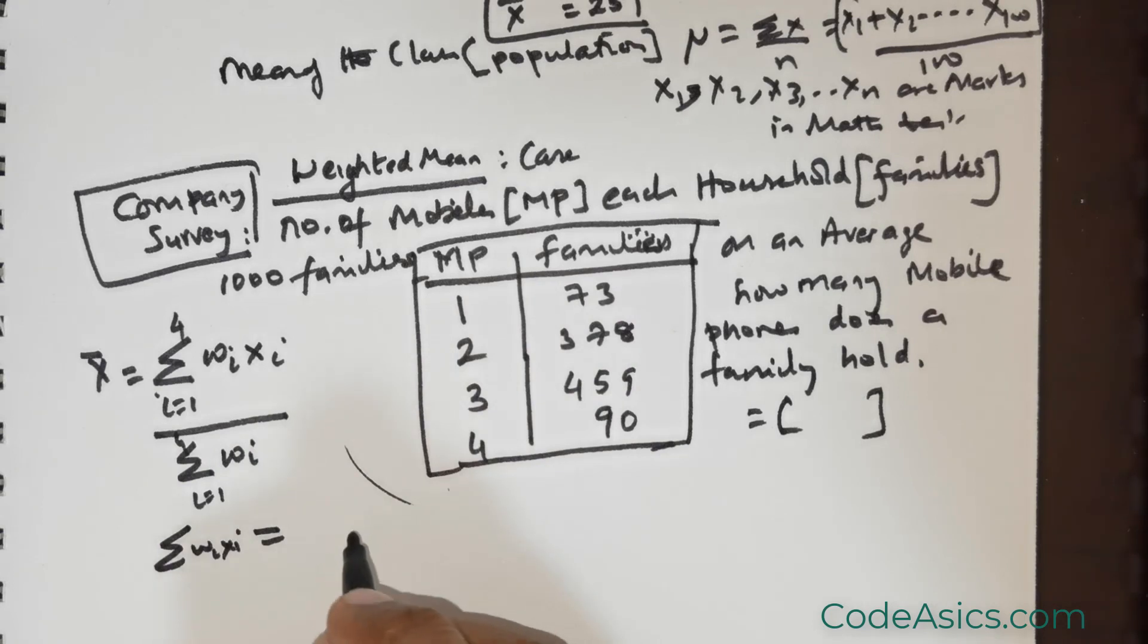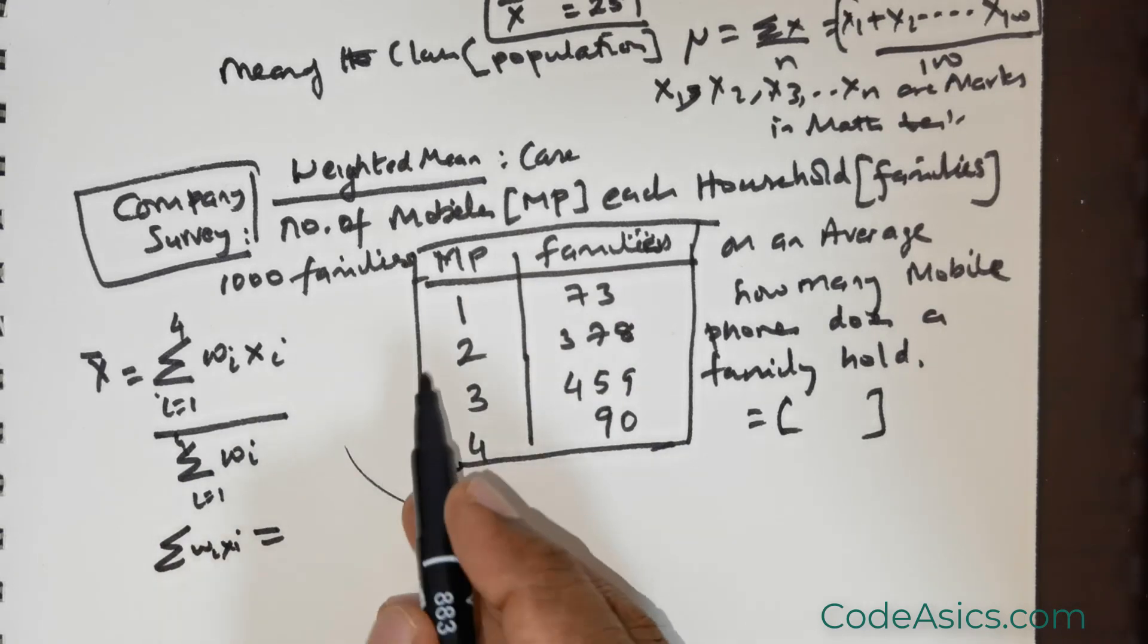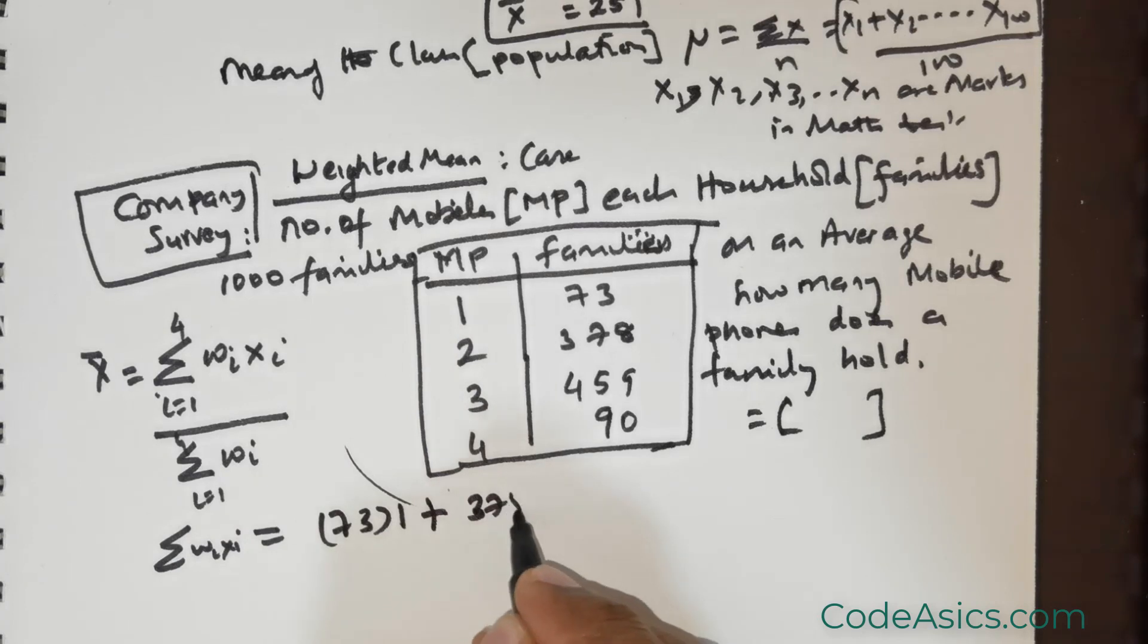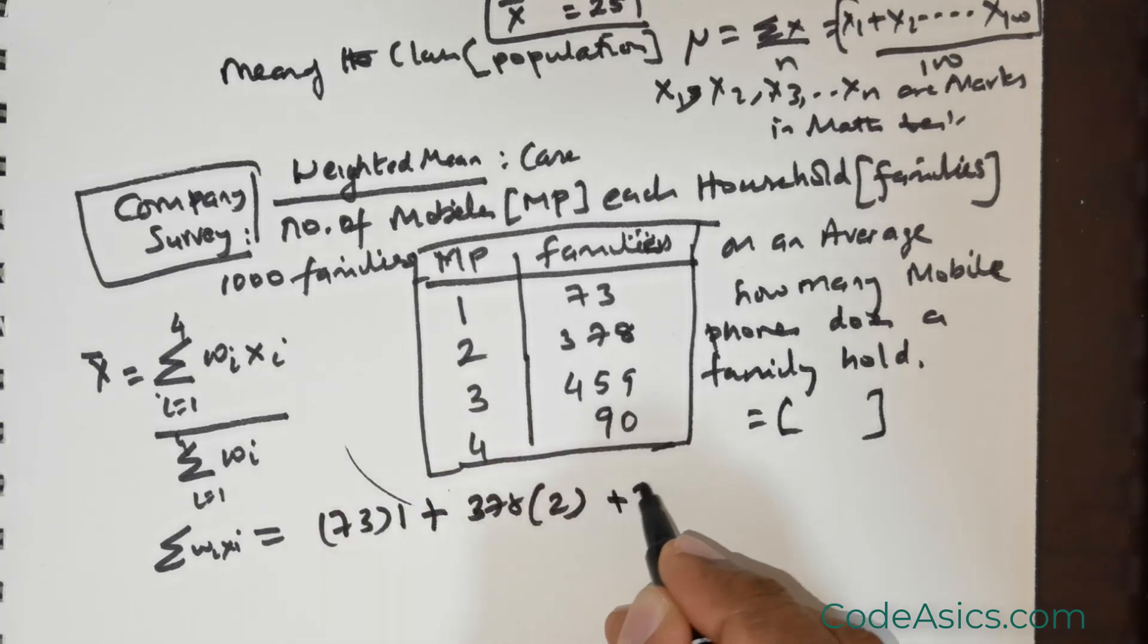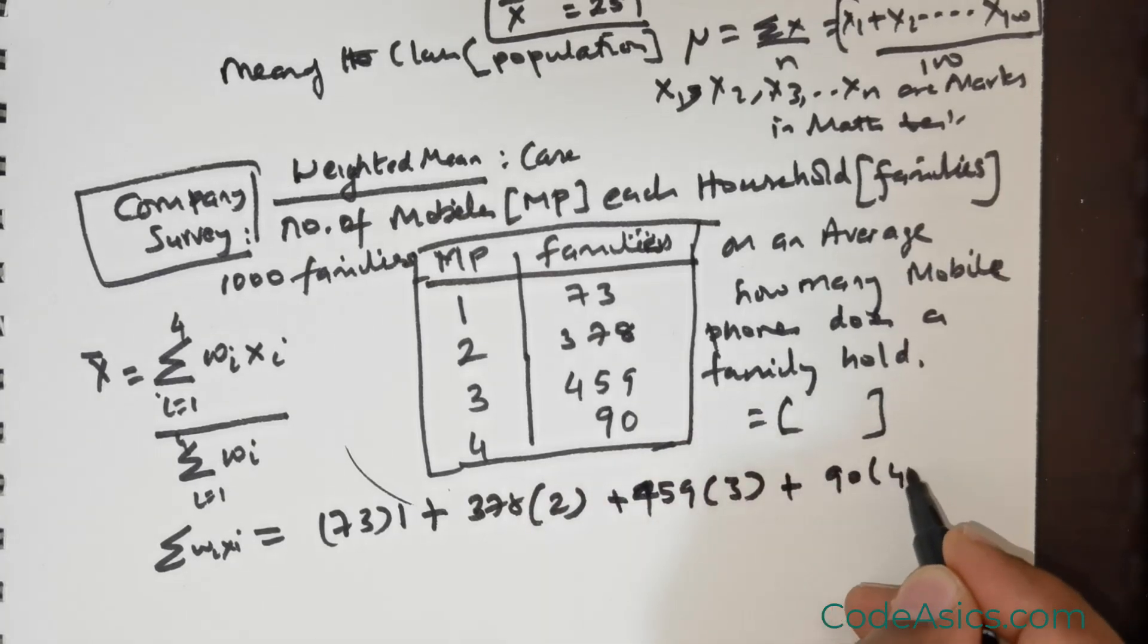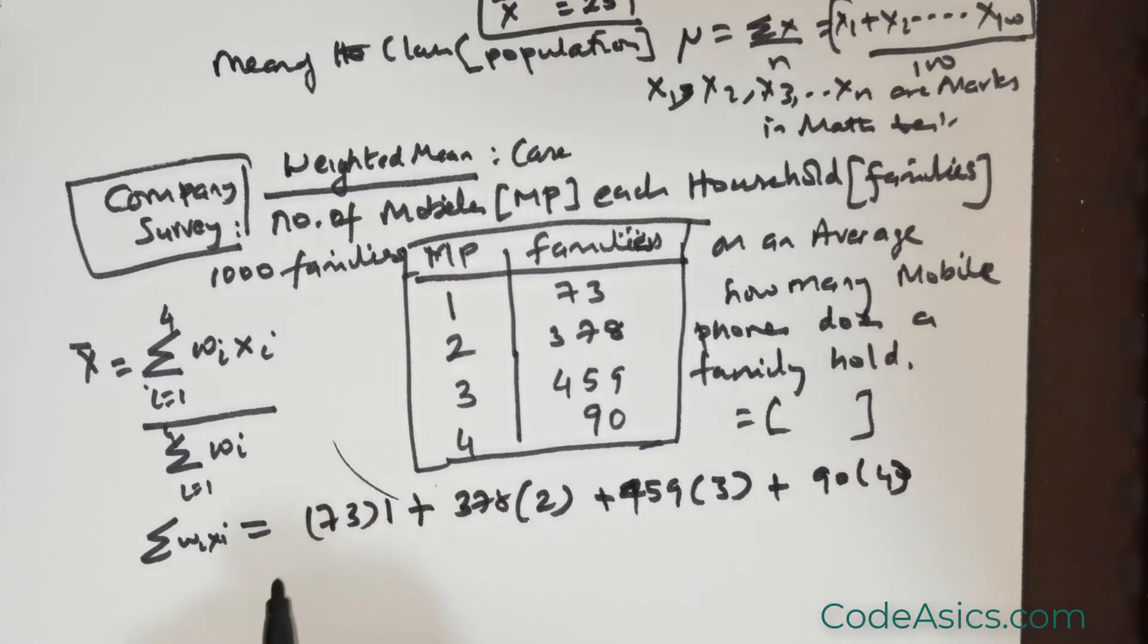That would mean I need to take the weight. In this case, the weight is going to be 73 multiplied by 1, plus 378 times 2, plus 459 times 3, plus 90 times 4. This will give you 2,566.